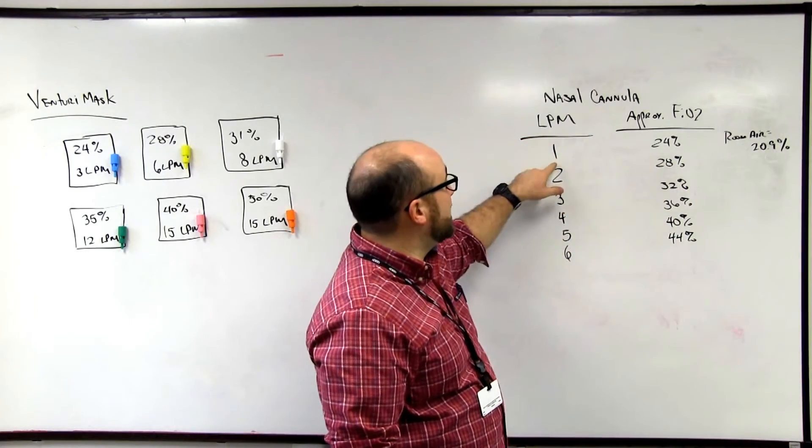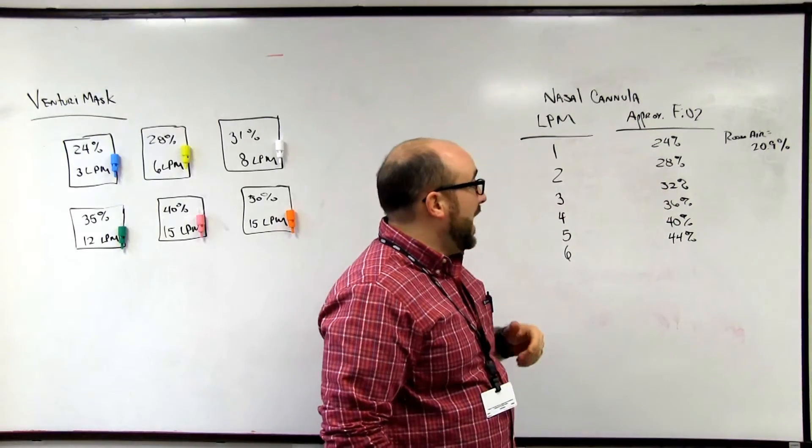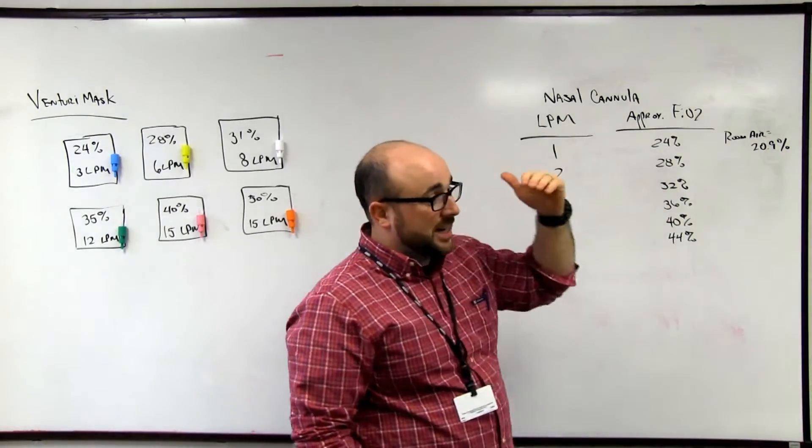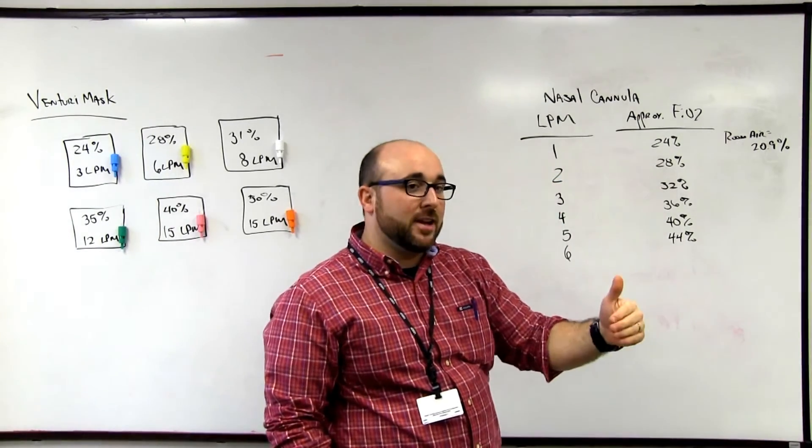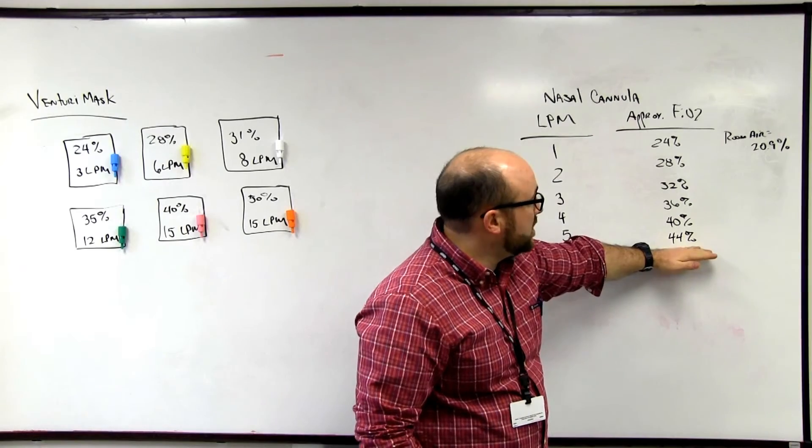So room air would be 20%, one liter is 24, two is 28, three is 32. These are all approximations of how much is actually getting to the alveoli. And you see up to six liters you can get about 44% oxygen.